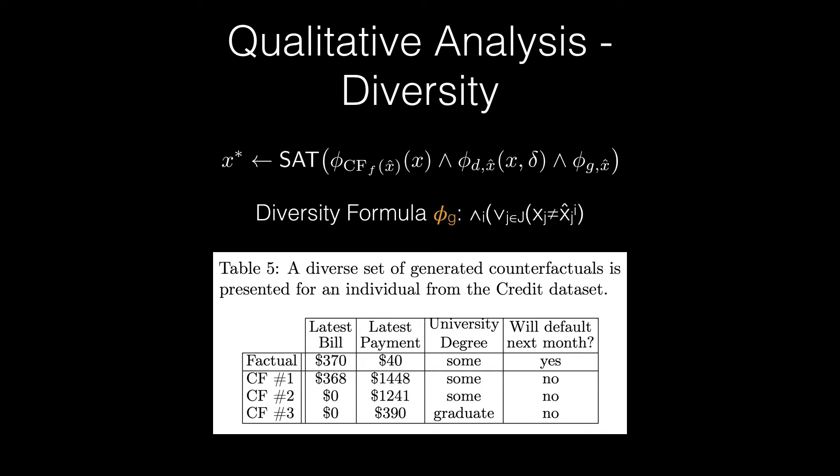What we see in this table in the returned counterfactuals, of which only three are shown, is that the bank can present John with diverse courses of action. In the first line, we can see that the bank suggests that John can continue spending the same as before, but make a large payment to account for continued expenditures.